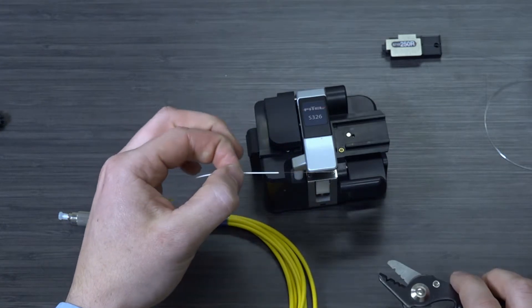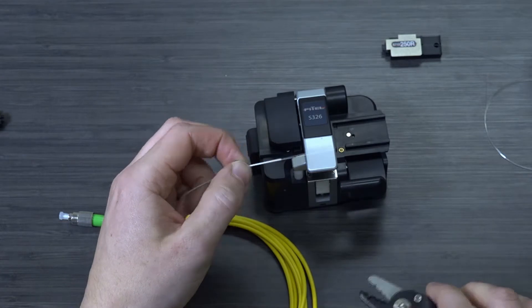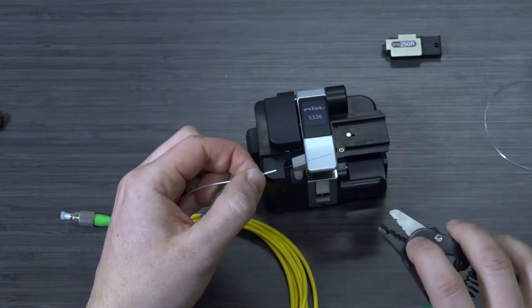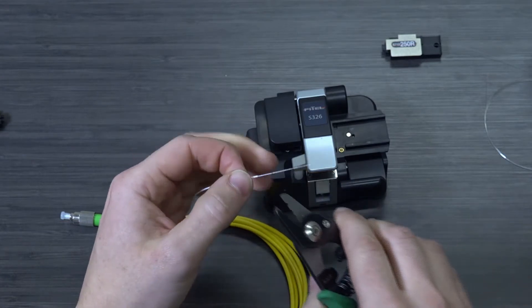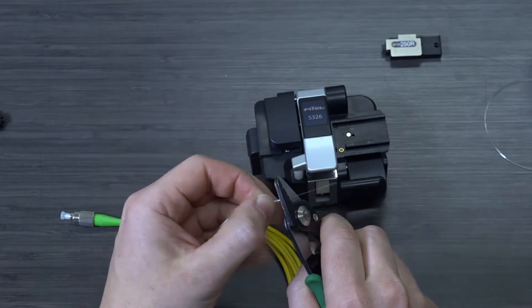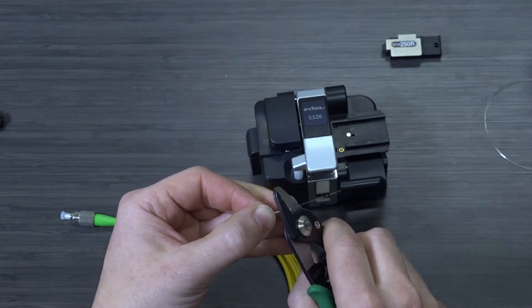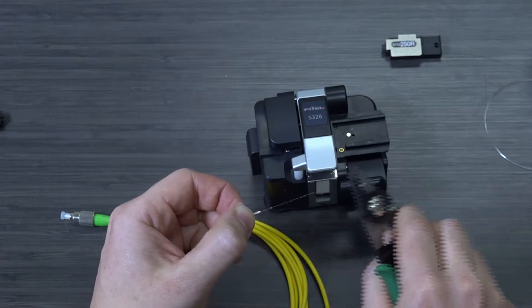So now we've exposed the coated fiber and as you can see I've even removed a little bit of the coating. So I'm just going to finish removing that coating with the coating removal part of the strippers. And sometimes it takes more than one pass. There we go.